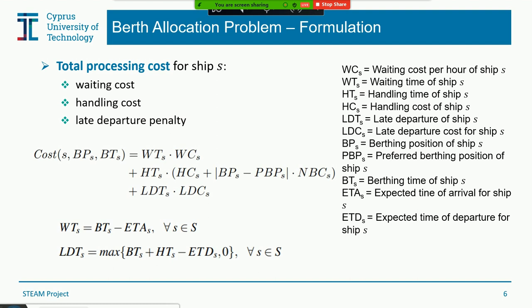The total processing cost of any ship includes three costs: waiting cost, handling cost, and late departure penalty cost. The waiting cost is the difference between arrival time and berthing time, incurred if any ship waits before optimal berthing. The handling cost is the cost of total loading and unloading operations. Late departure penalty is added if any ship departs later than the requested departure time. We also added one penalty for non-optimal berthing position: if a ship has a preferred berthing position and our method does not assign it, a specific penalty is added to the total handling cost.